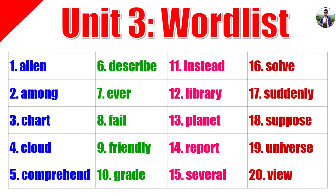Planet: A planet is a large round thing in space. Saturn is the planet with the ring around it. Report: A report is something students write for school. Karen had trouble writing her report. Several: Several is more than two but not many. He had to read several books for class.